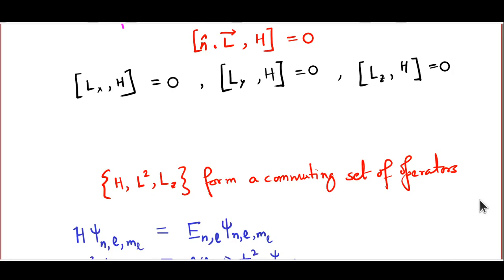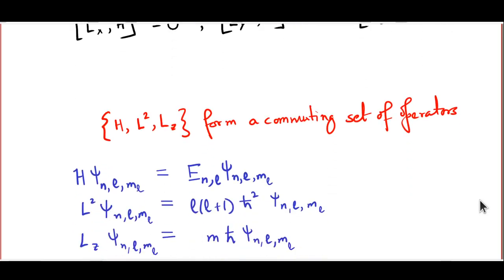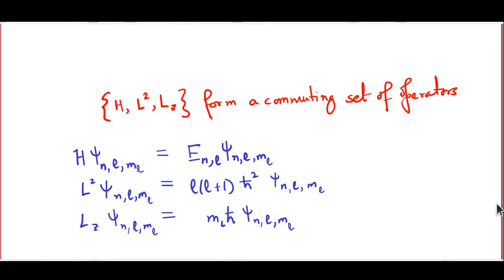We can have a state psi characterized by three eigenvalues: that of H, that of L², and that of Lz. From our theory of angular momentum, L² eigenvalues are of the form l(l+1)ℏ², and Lz eigenvalues are of the form mₗℏ. The reason we use the suffix l on m is to distinguish mₗ from mₛ, which is the spin projection eigenvalue. In this lecture, we are going to ignore spin completely, so mₛ will not be discussed.